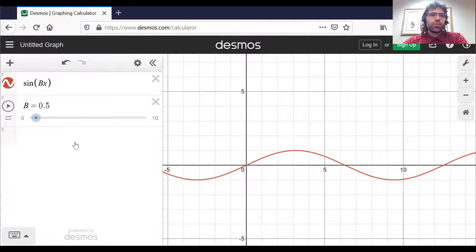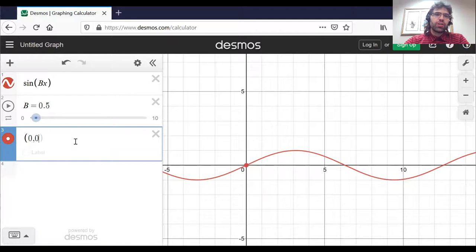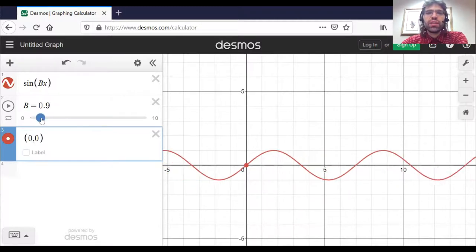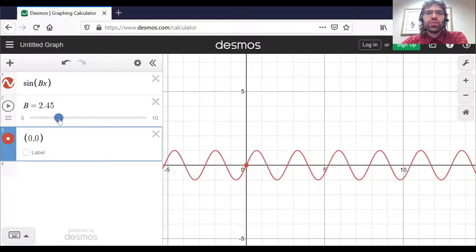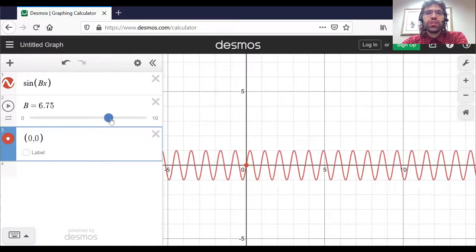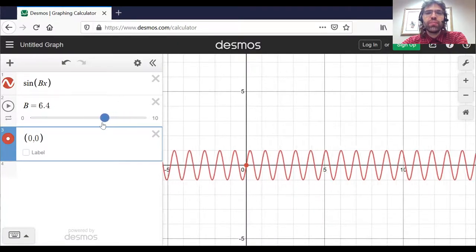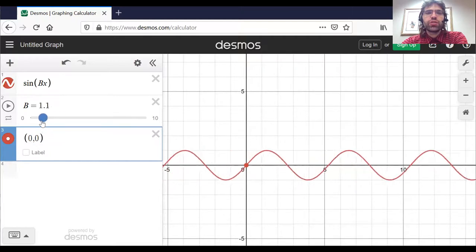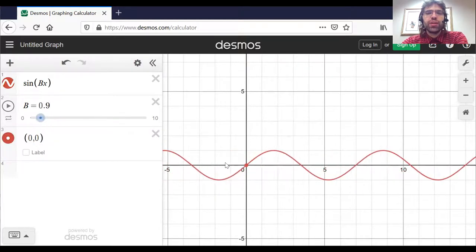Notice that I'm not changing this starting value. So as b changes, the period decreases or increases, but we're always here at x equals zero.